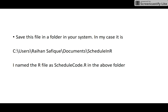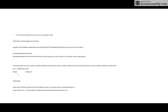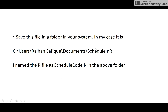I'll show you the second step of making something automated. In the first step, you saved your .R file in a specific folder. Remember where you saved it — I saved mine in My Documents, in a folder called 'scheduled R', and I saved the R script as 'schedule_code.R'.